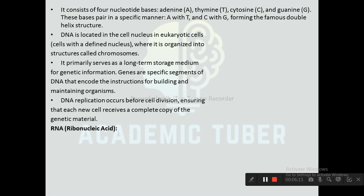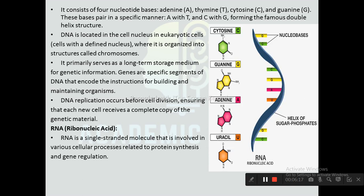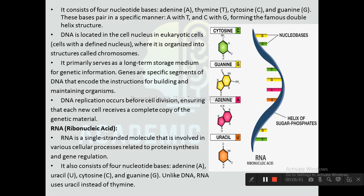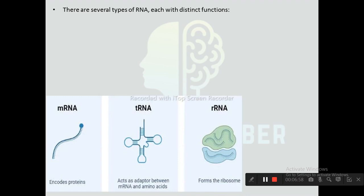RNA is a single-stranded molecule involved in various cellular processes related to protein synthesis and gene regulation. It is a polynucleotide where each nucleotide is formed by the combination of a nitrogen base, ribose sugar, and phosphate. RNA consists of four nucleotide bases: adenine, uracil, cytosine, and guanine. Unlike DNA, RNA uses uracil instead of thymine.